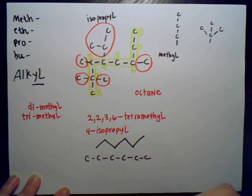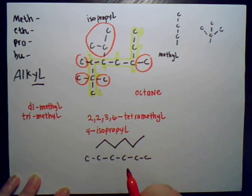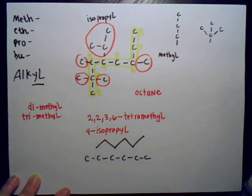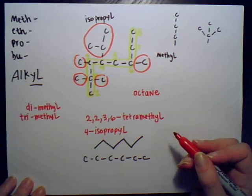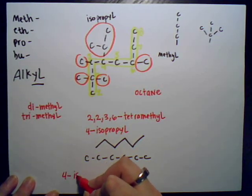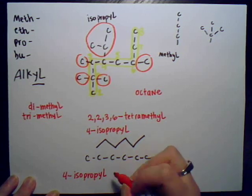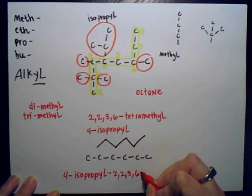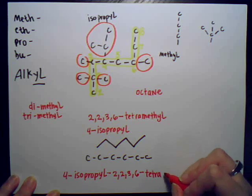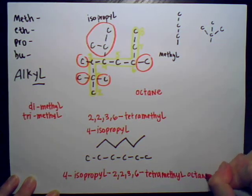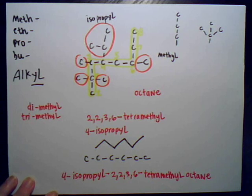IUPAC convention says that you alphabetize the substituent names — except for the last name (octane, methane, hexane, etc.), which always goes at the end. The substituents are alphabetized, so 'iso' comes before 'tetra.' Therefore we write: 4-isopropyl-2,2,3,6-tetramethyloctane. And that is the full IUPAC name of this molecule.